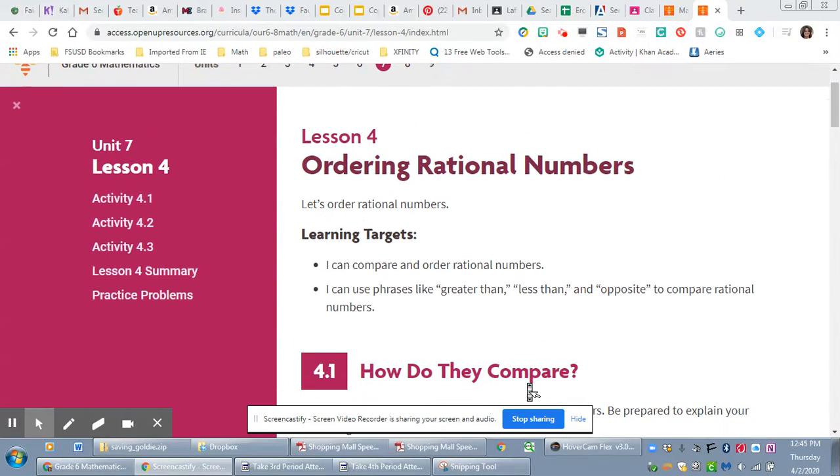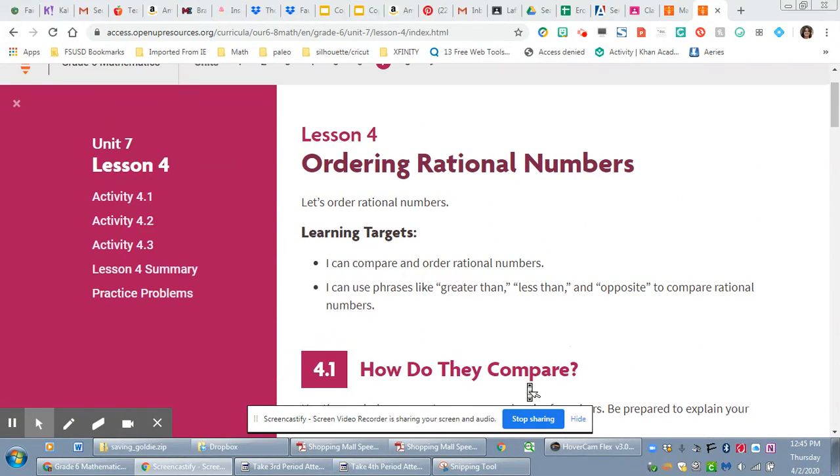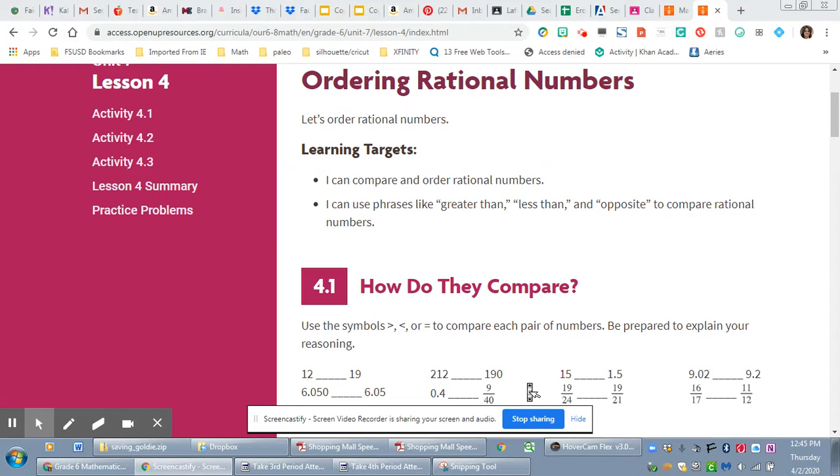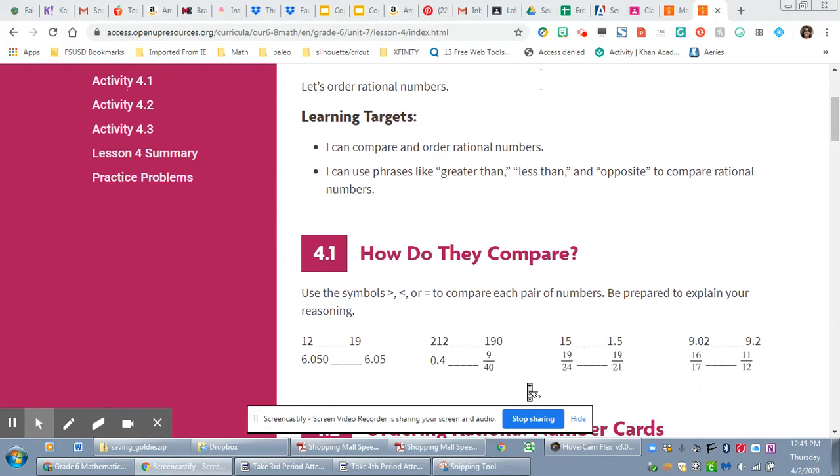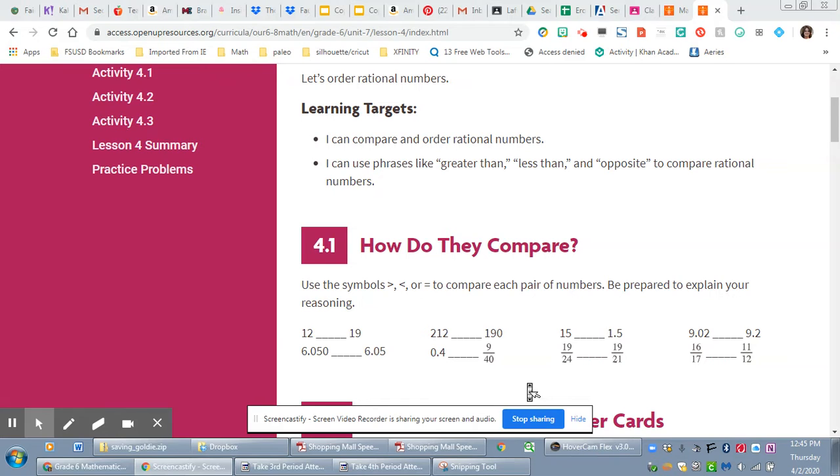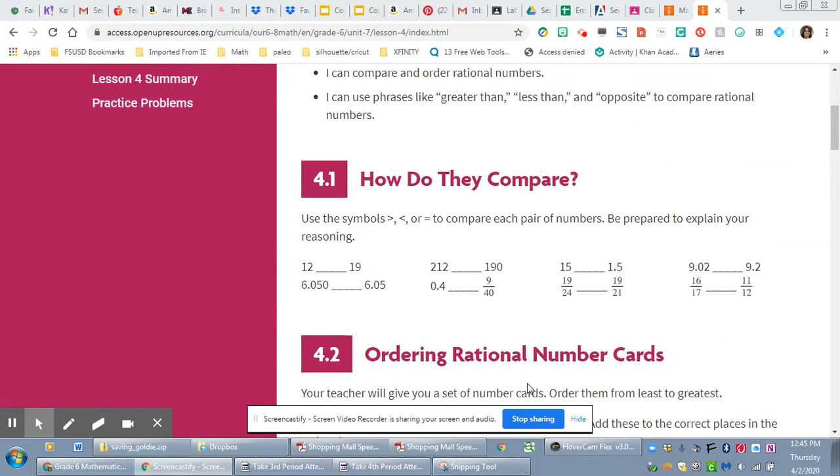Hi guys, it's Mrs. Lafayette. Today we're doing Unit 7 Lesson 4, Ordering Rational Numbers. So the targets: I can compare and order rational numbers. I can use phrases like greater than, less than, and opposite to compare rational numbers.